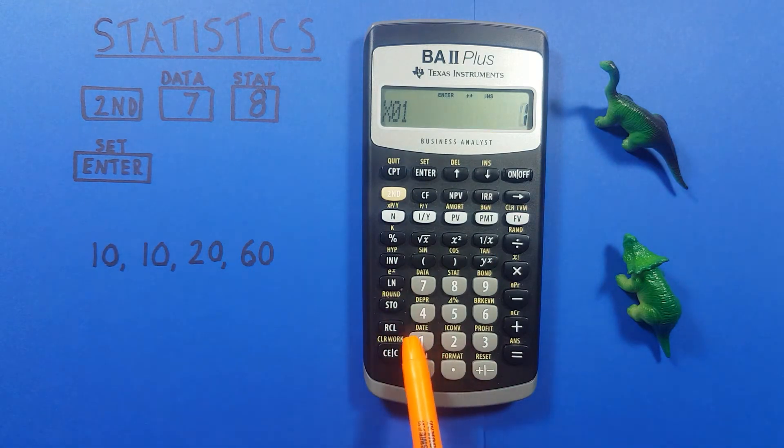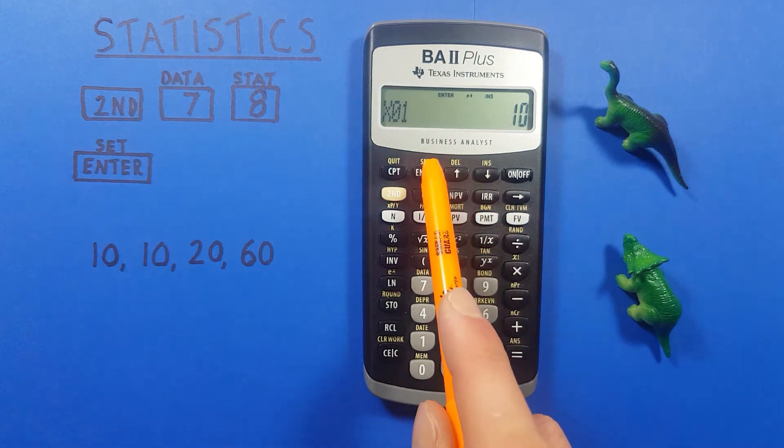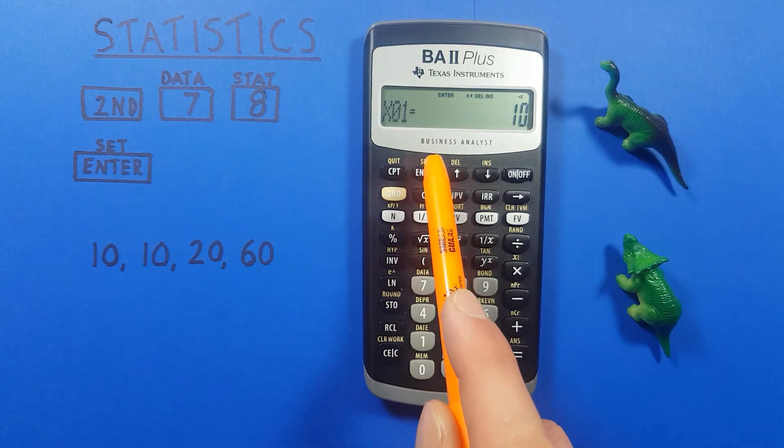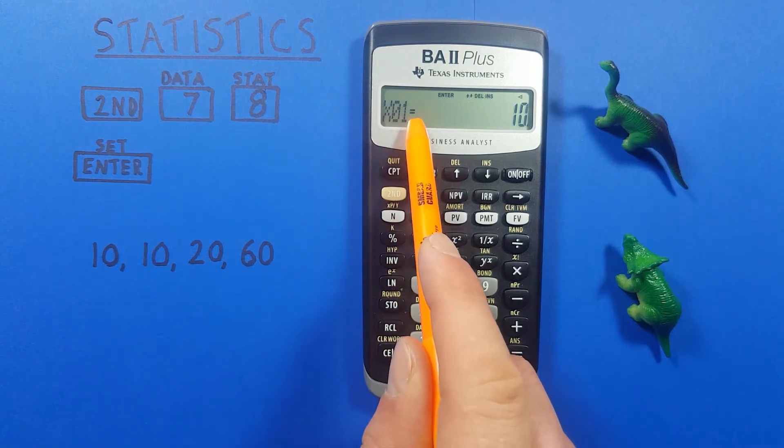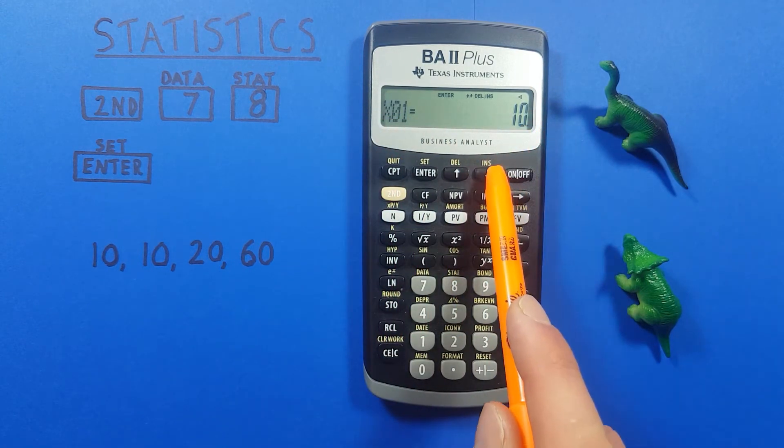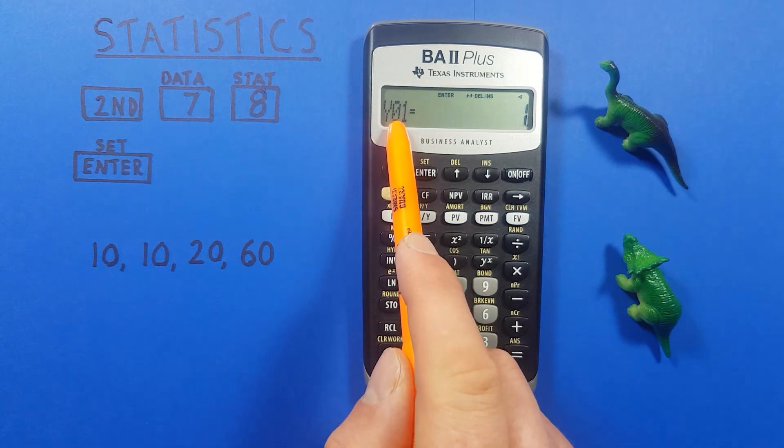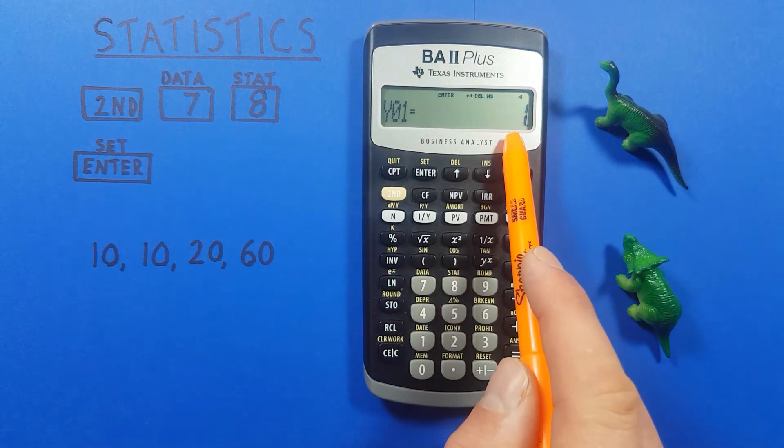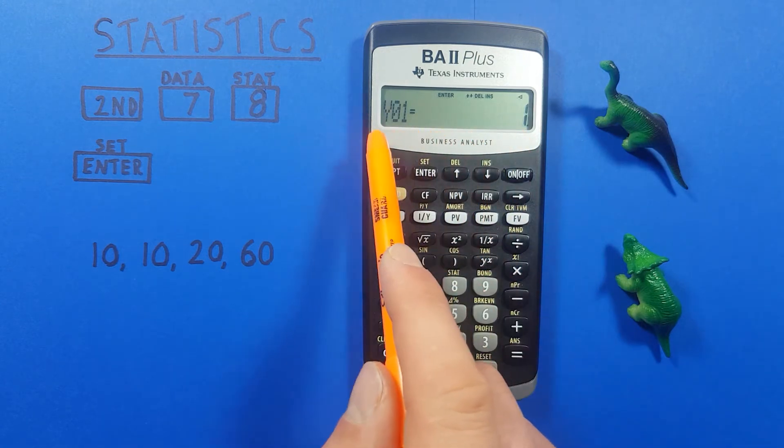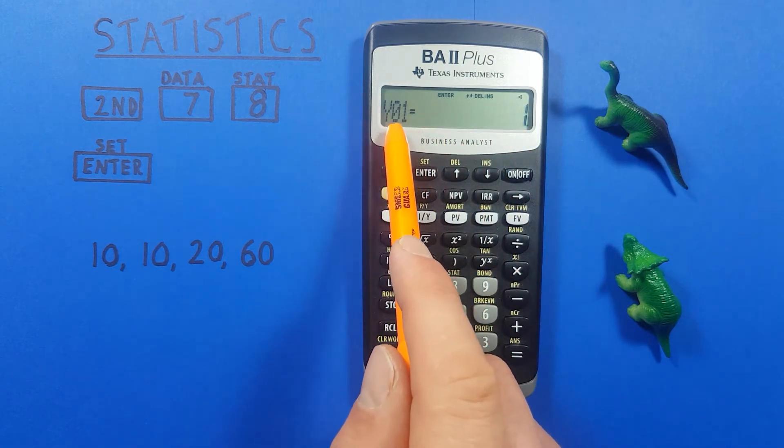For us it's 10 so we enter 10, press enter, there we can see x1 equals 10 and then if we go down we see y equals one. This if we were doing two variable statistics is where we would enter our y variable but in this case we can enter our frequency here.